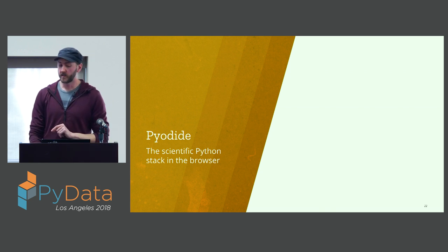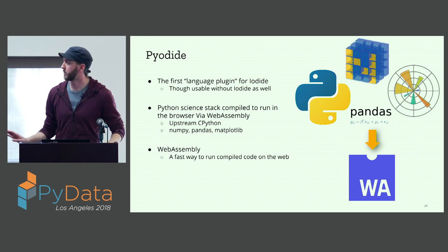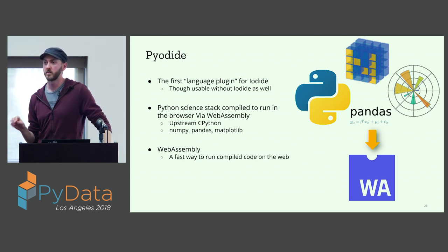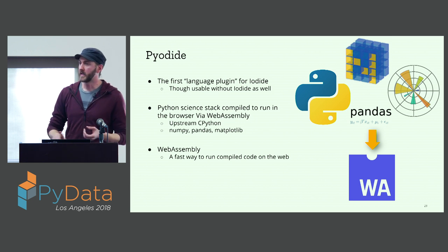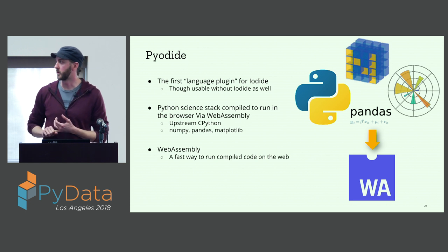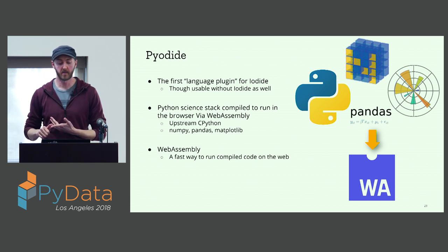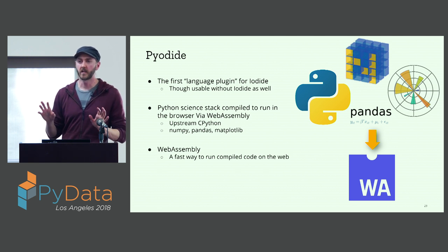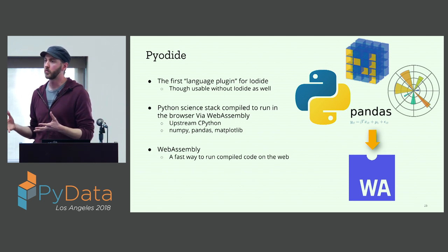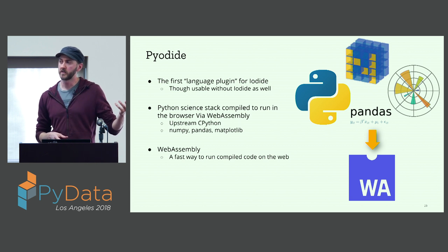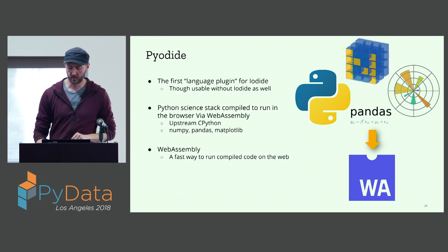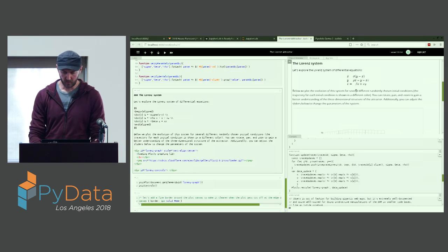Now I'm going to show you Pyodide, which is the scientific Python stack compiled to run in the browser. Pyodide is the first language plugin for Iodide, but it's important to note that it runs outside of Iodide too — if you want to run Python in the browser for your own projects, you can take Pyodide and run it independently. What we have in Pyodide right now is base Python — the CPython interpreter itself — along with NumPy, pandas, and matplotlib. All of those are compiled to WebAssembly, which is basically a bytecode format for the web that allows you to take C code and compile it to run inside a browser.